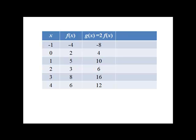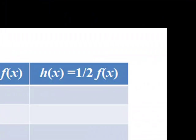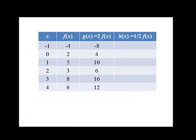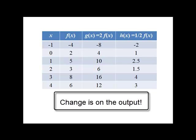Now, before we look at this graphically, what if we also define a function h of x to be 1 half f of x? Again, this will do exactly what we expect. It'll multiply all the y values by a half. Notice that the change is on the output. Our outputs have been changed, nothing with the inputs.